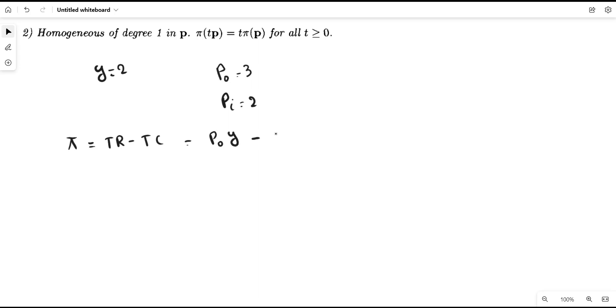And total cost is price of input times quantity. We know that this is equal to 3 times 2 minus 2 times 2, which equals 6 minus 4, I am sorry, this equals 2.